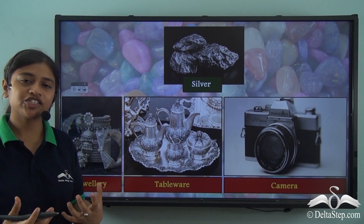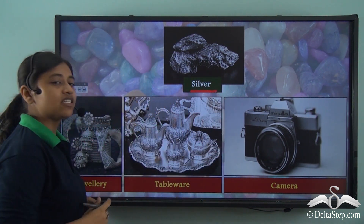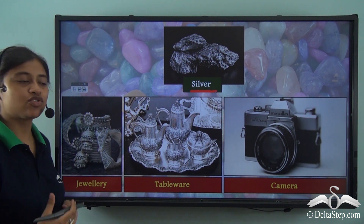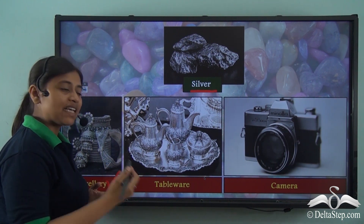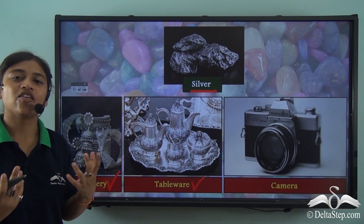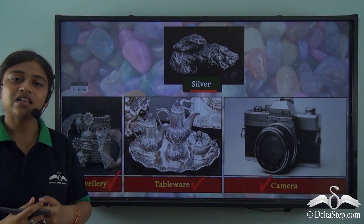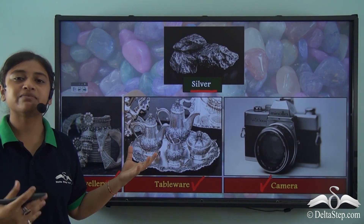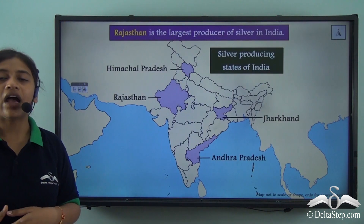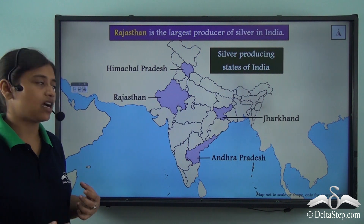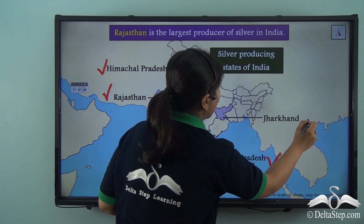Another important precious metallic mineral is silver. Silver is commonly and widely used to make jewellery pieces. It is also used in making tablewares — such tablewares signify royalty. Silver is also used in the making of cameras. So just like gold, silver has various uses as a precious metallic mineral. The leading producers of silver in India are Himachal Pradesh, Rajasthan, Andhra Pradesh and Jharkhand.